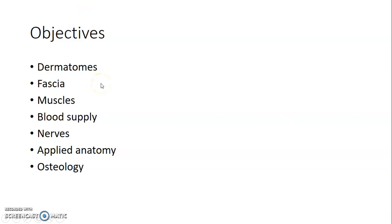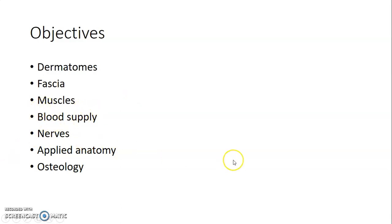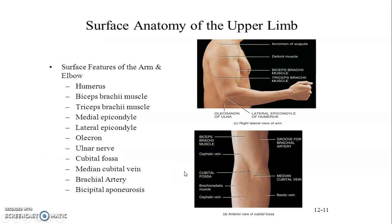We start with the cutaneous — the skin — which includes the dermatomes. The definition of a dermatome is a skin segment innervated by a single spinal nerve. After that, we go to the fascia, which is connective tissue, then muscles, blood supply, innervation, and applied anatomy. There is also osteology, so as you go from the skin, the last thing you encounter is the bone.